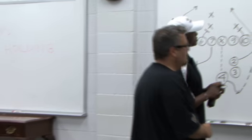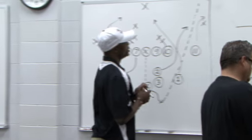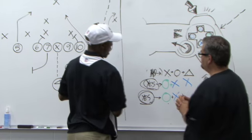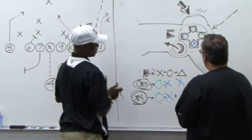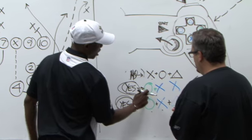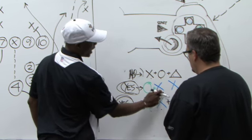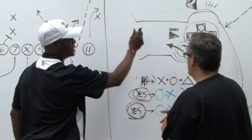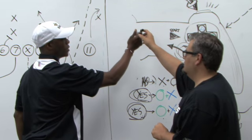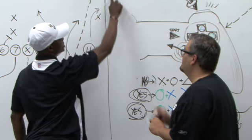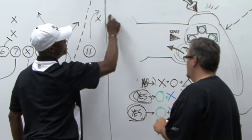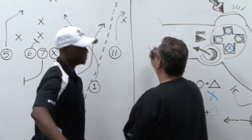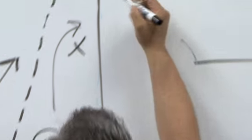Stand up, come this way real quick. This is what I want you to do. Help me out — I want you to draw o-x-x until I say stop. Right here, just do it, come on.